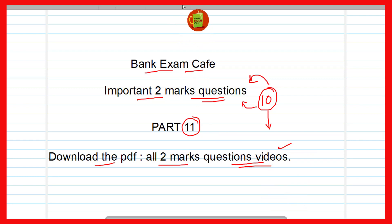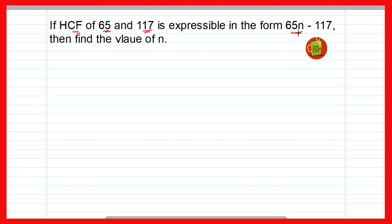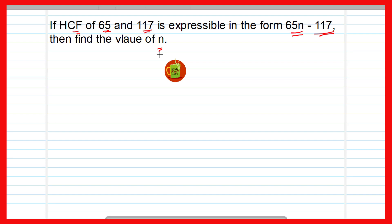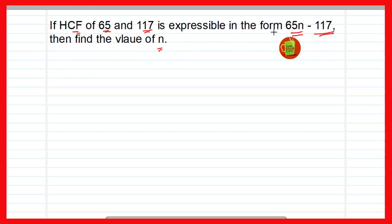Now let us move to the first question of today's episode. The HCF of 65 and 117 is expressible in the form of 65n minus 117. Find the value of n. You have to find the value of n, which means it is the HCF only, so first we will find the HCF of 65 and 117.